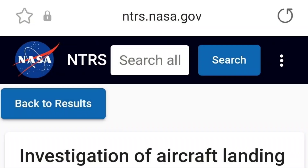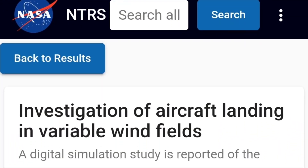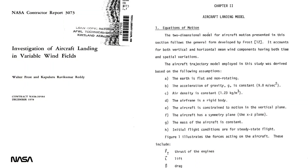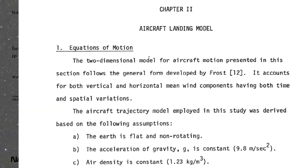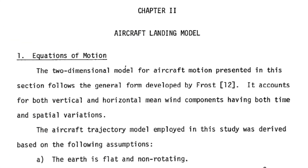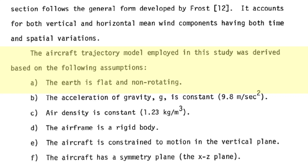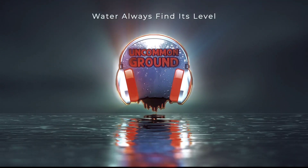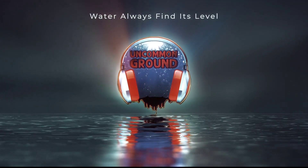The 1978 NASA Contractor Report 3073, 'Investigation of Aircraft Landing in Variable Wind Fields,' begins chapter two by outlining its equations of motion. The aircraft trajectory model employed in this study was derived based on the following assumptions, with the first and foremost being: the Earth is flat and non-rotating. I'm West Blaze — stay tuned for more from Uncommon Ground.